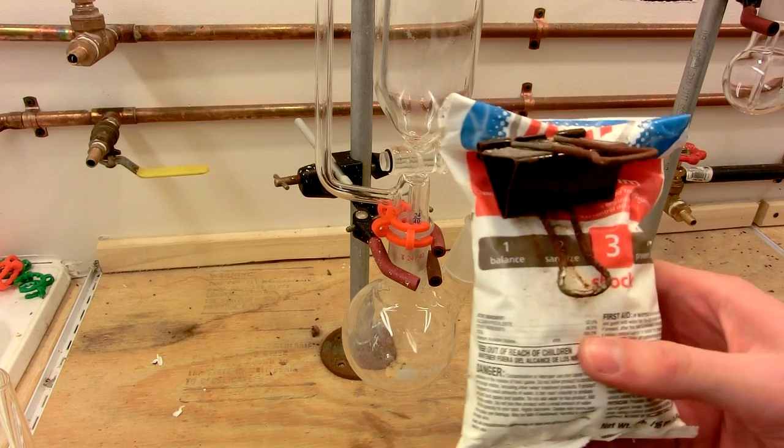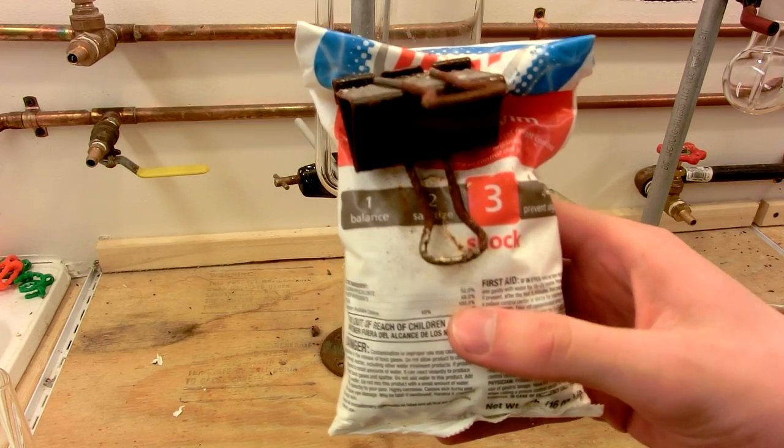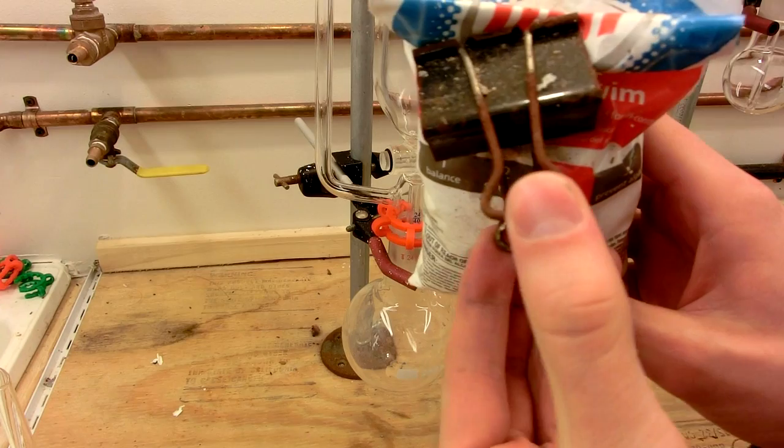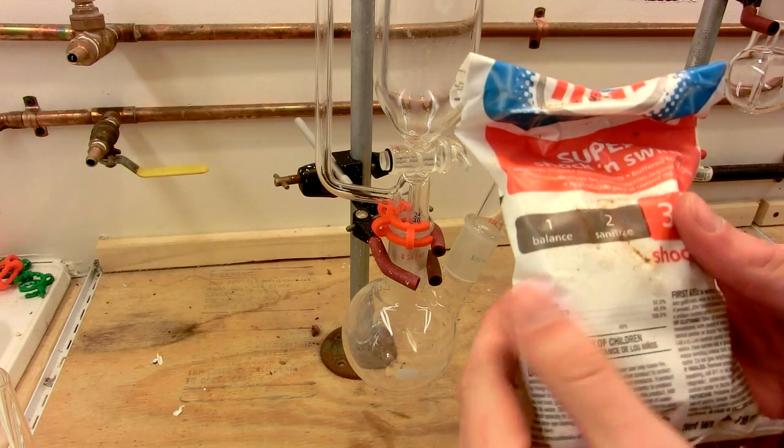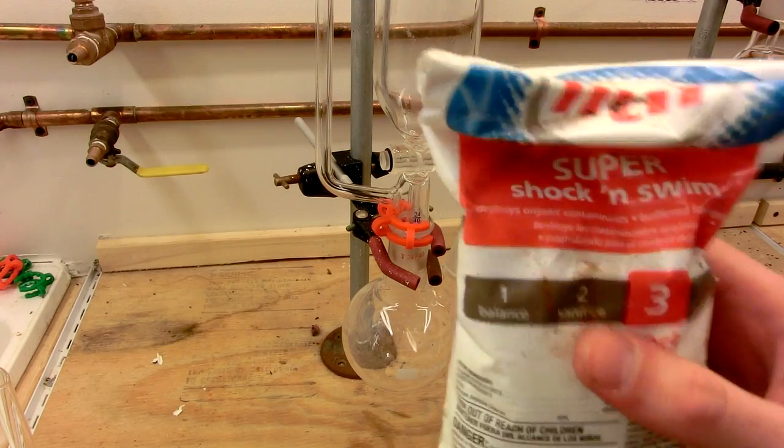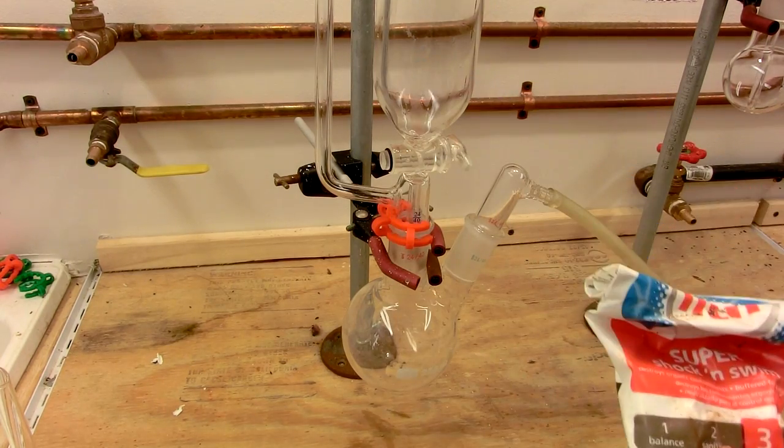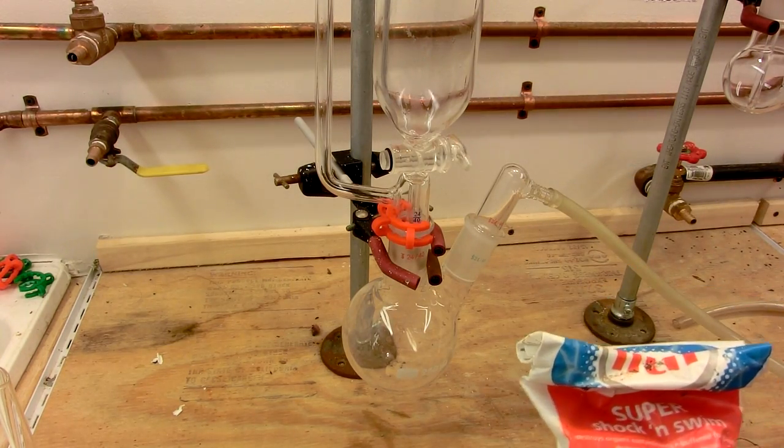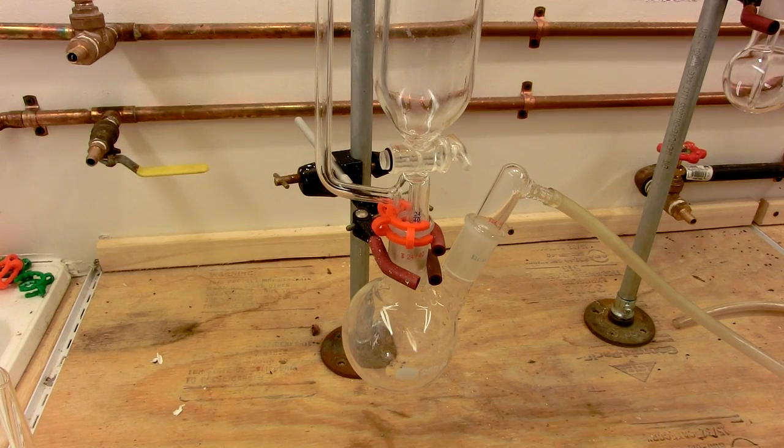So here I have HTH brand pool shock, and you can see chlorine is nasty, it corrodes the crap out of everything. This is 52% calcium hypochlorite, and we're going to use this. I usually measure out stoichiometric amounts, however, this is just a demonstration, so I'm going to eyeball it.